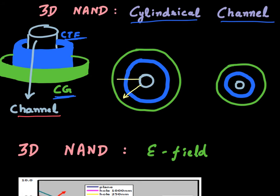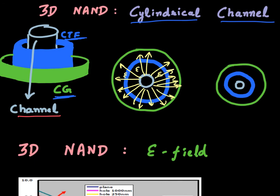If you draw the field lines in this cylindrical channel, they originate from the polysilicon channel and terminate at the control gate. Because the cell is cylindrical in nature, the density of these field lines is much higher towards the polysilicon channel, so you have a much larger electric field close to the channel, and the electric field decreases as you move towards the control gate.